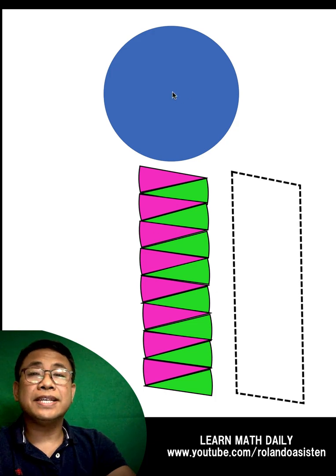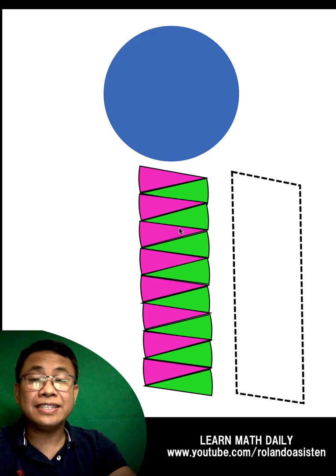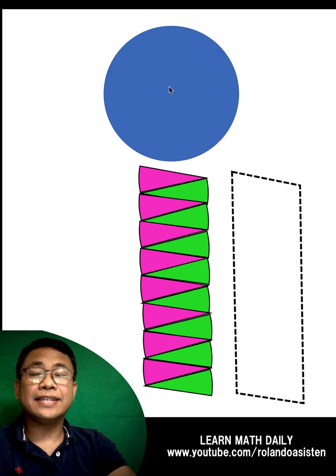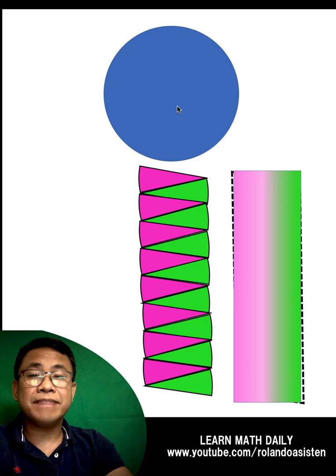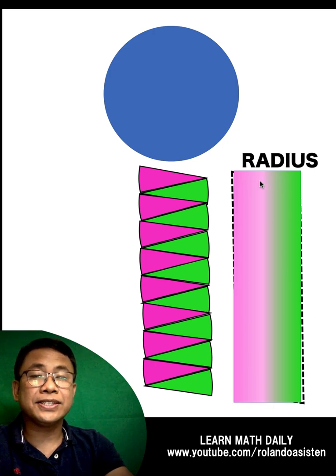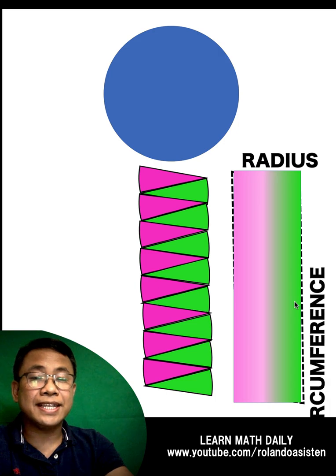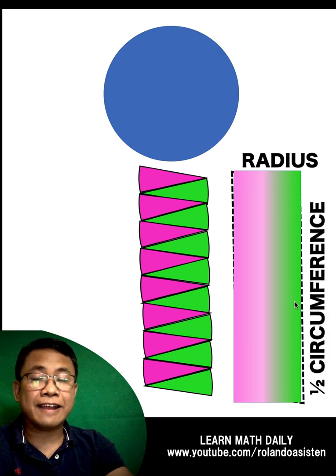Now if instead of just cutting this circle into 16 sectors like this, we can cut the circle into very thin sectors, and if you do that, this is the shape that we are going to form. From a parallelogram, we now have a rectangle where this side represents the radius and this side represents one half the circumference.